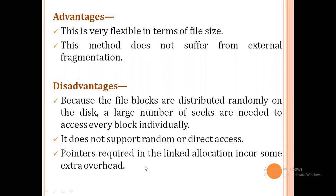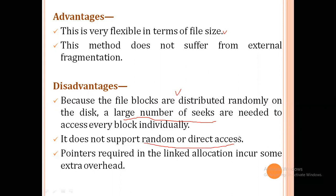The advantage of linked allocation is that it is flexible regarding file size, because we do not store blocks in a continuous form — we can store them anywhere on the disk. The disadvantage of contiguous allocation was external fragmentation, but in linked allocation there is no external fragmentation, making it relatively better for memory utilization. The disadvantage is that since file blocks are randomly distributed, accessing them requires a large number of seek operations. It does not support random or direct access, and the pointers required to link blocks also incur extra overhead.